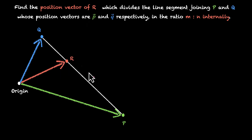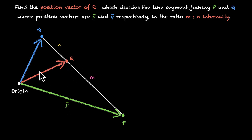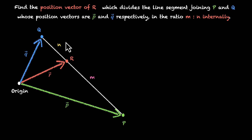This ratio is m is to n. We know these position vectors — p vector, q vector — and let's call this r vector. So we need to find r in terms of p, q, m and n.